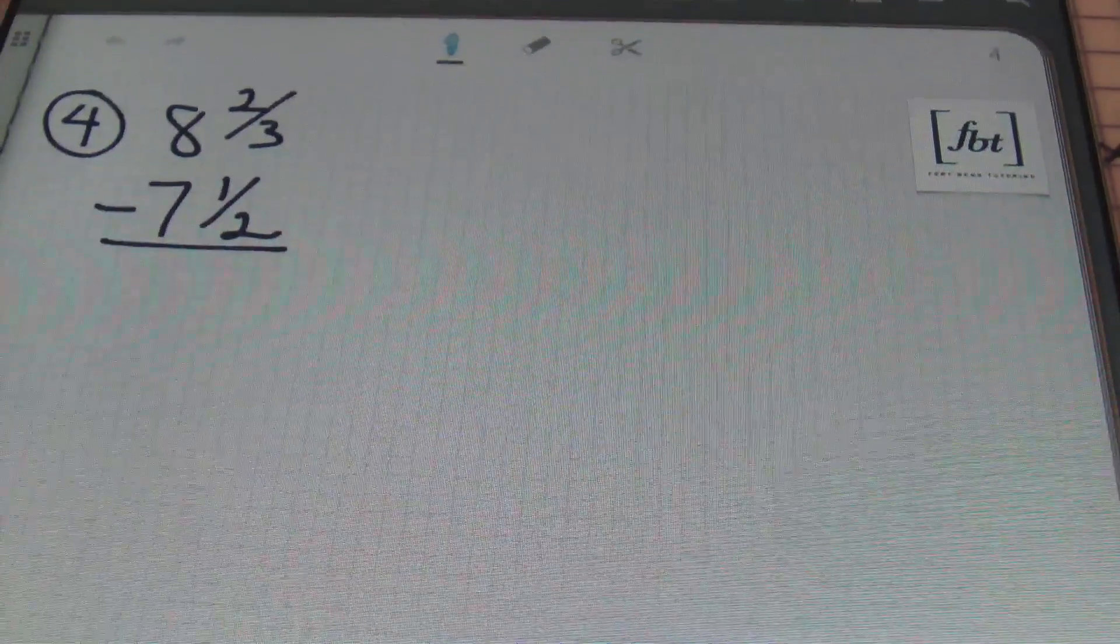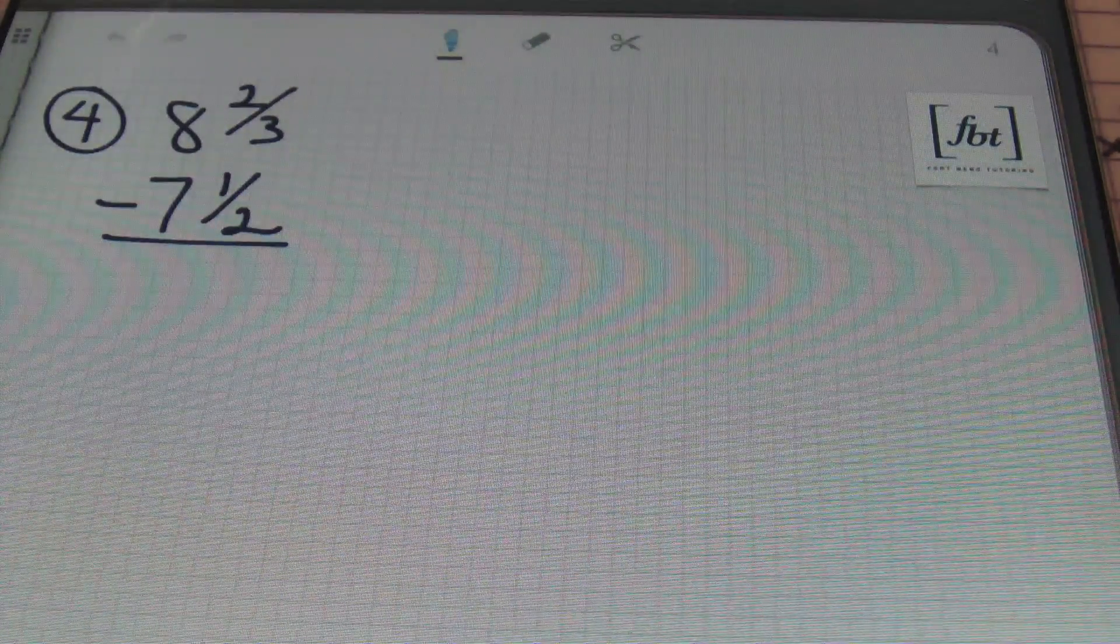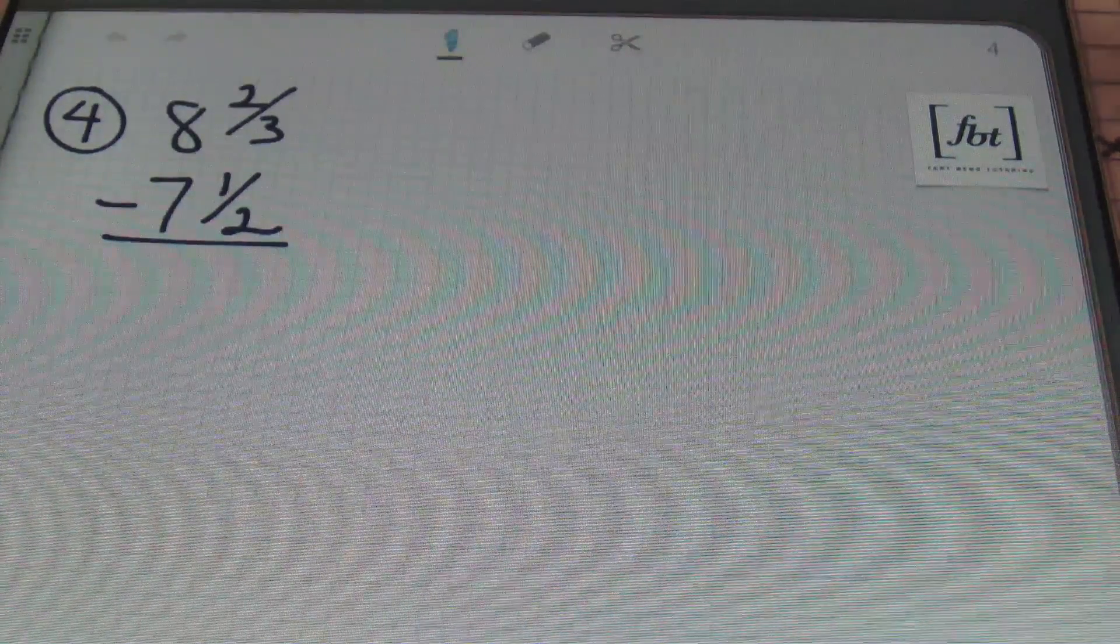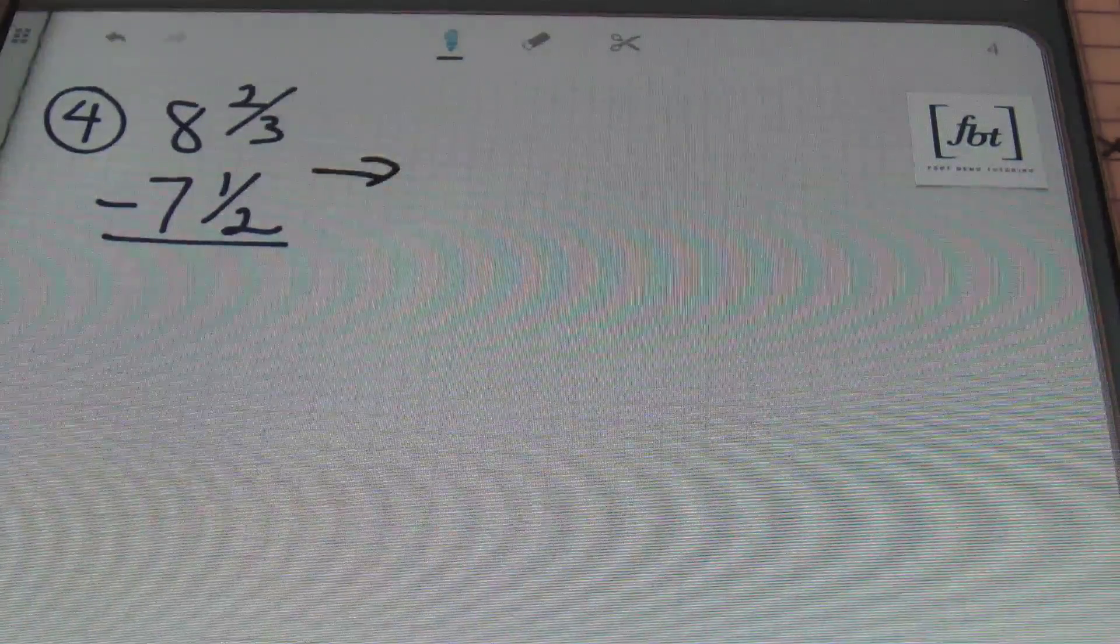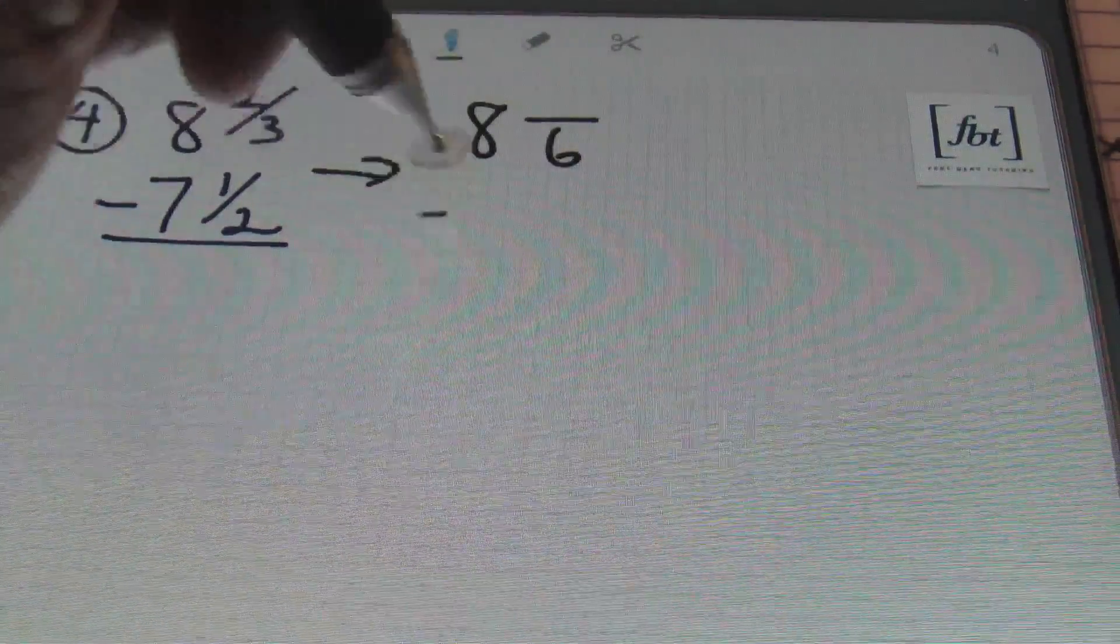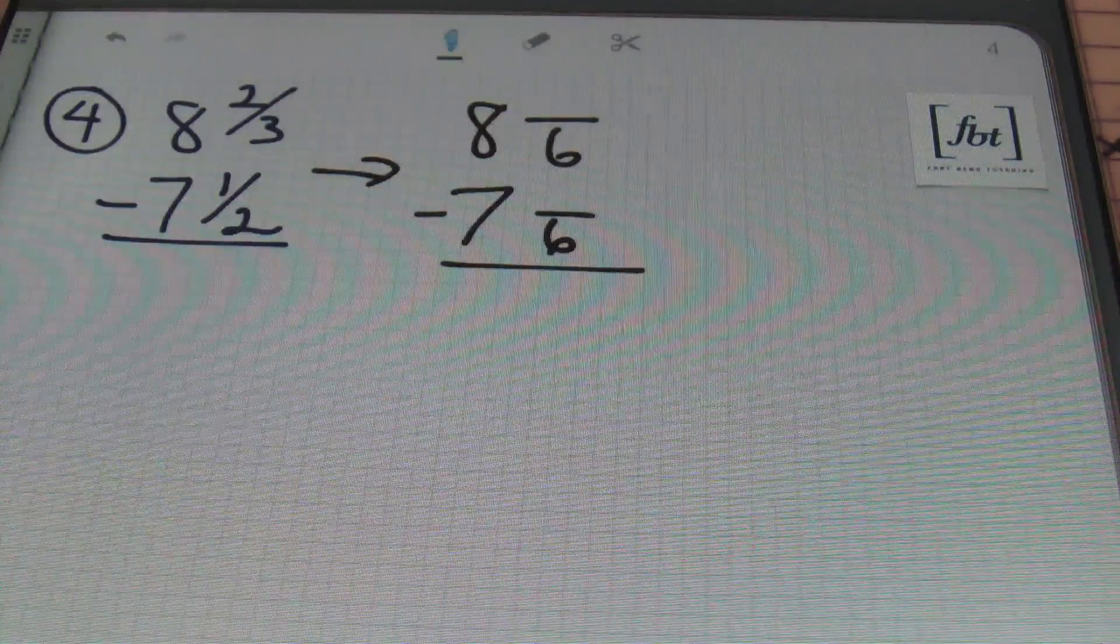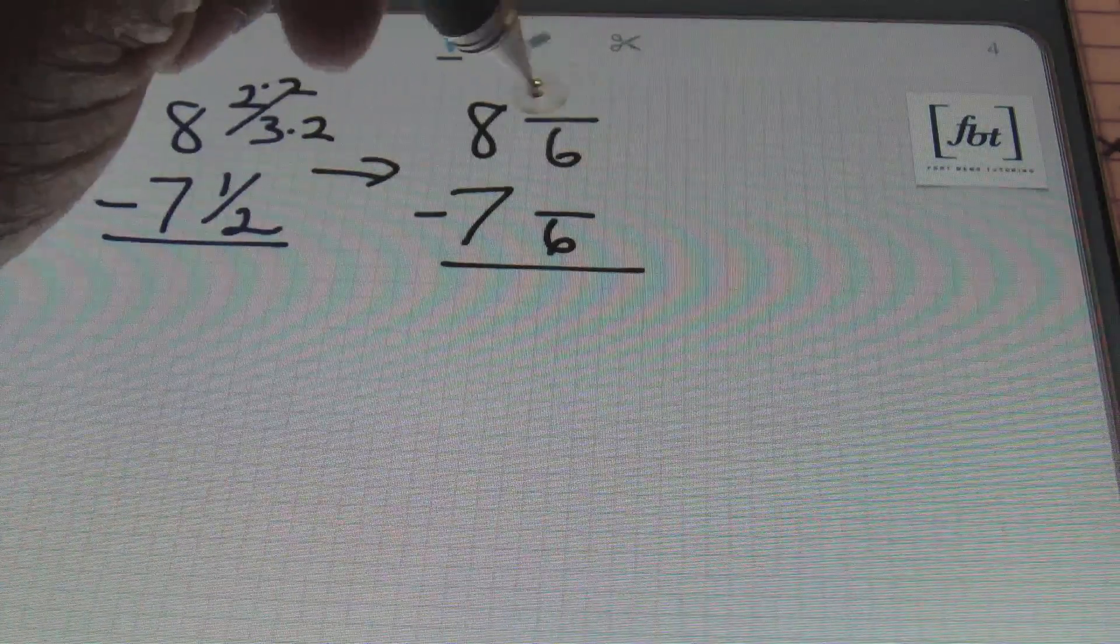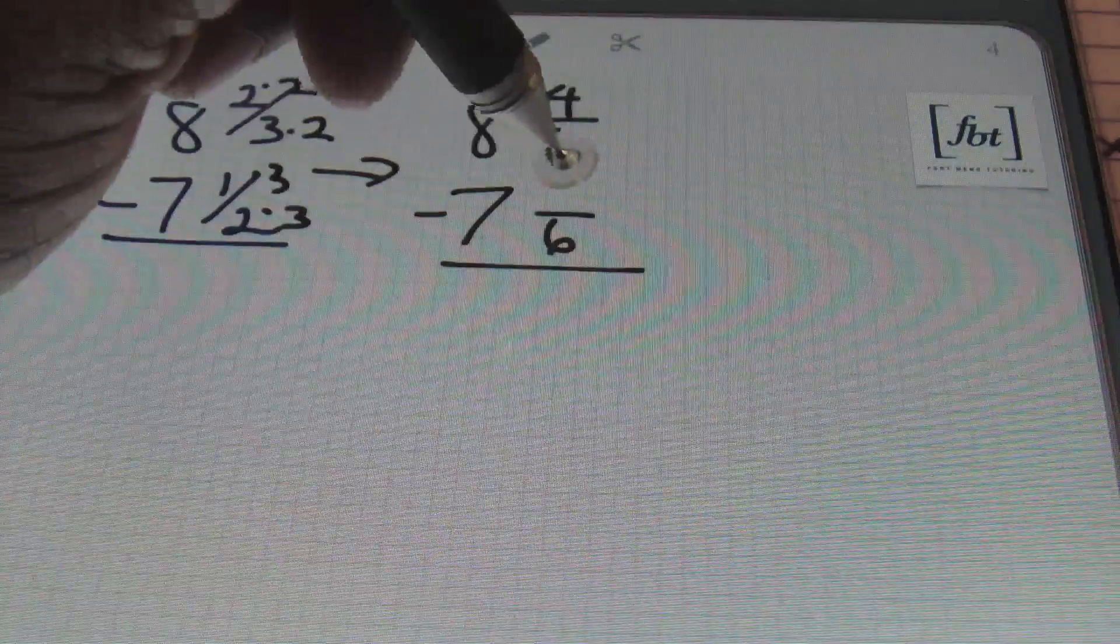Let's go ahead and move on to problem number 4 now. In problem number 4, I have 8 and 2 thirds minus 7 and a half. The first concern we have is changing both of these denominators into a common denominator. The first number that 3 and 2 can both go into evenly is 6. So I'm going to rewrite my mixed numbers with denominators of 6 now. We need to get those equivalent fractions. So 3 was multiplied twice, so 2 times 2 gives me 4. And then 2 was multiplied 3 times, so 1 times 3 is 3.